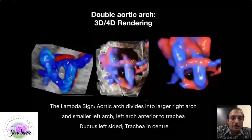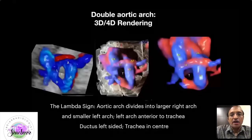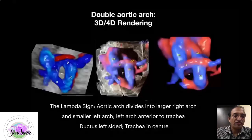This is a complete vascular ring with the trachea in the center, and it typically causes tracheal compression — so this baby is likely to be born with stridor. The distinguishing feature between the right arch and the double arch is that in the double arch the ascending aorta divides into a smaller left arch and a larger right arch, while in simple right arch the ascending aorta just continues on the right side with no bifurcation. This is a situation where 3D/4D rendering is really helpful and sometimes gives confirmatory pictures.